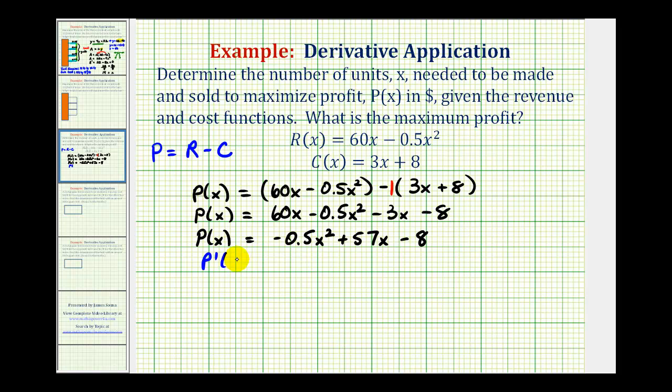P prime of x is going to be equal to, here we'll apply the power rule, so multiply by 2 and then subtract 1 from the exponent. That's just going to be negative 1x or just negative x. The derivative of 57x would just be 57. The derivative of negative 8 would be 0.